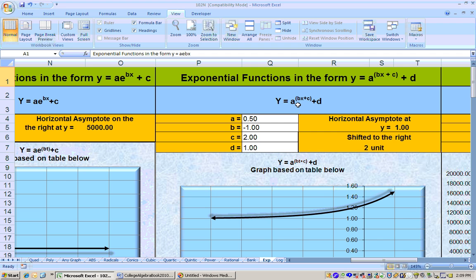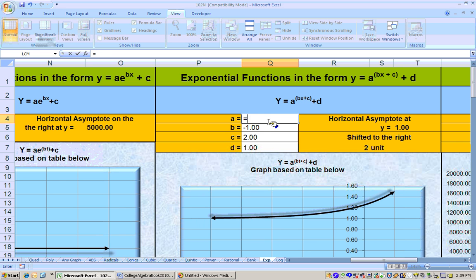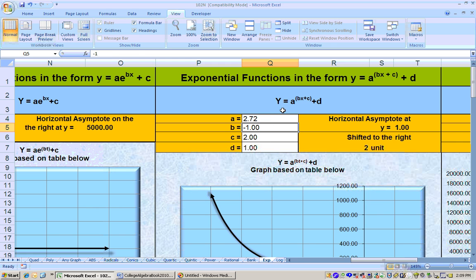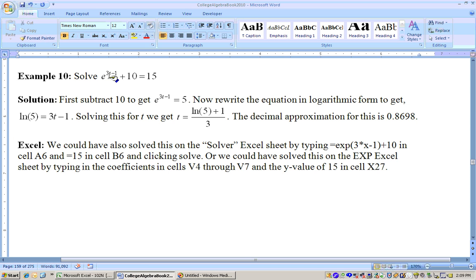And we could just use the a as 1 and e. We could do equals exp of 1. That allows me to put e in as the base. And then the b on this problem was, let's see, 3 and then a minus 1.